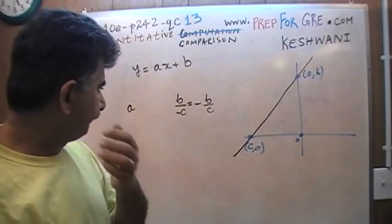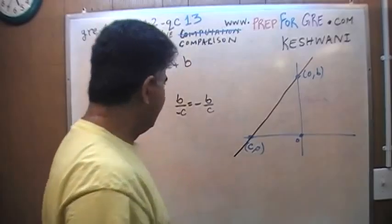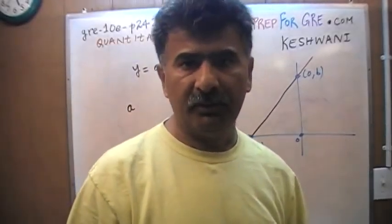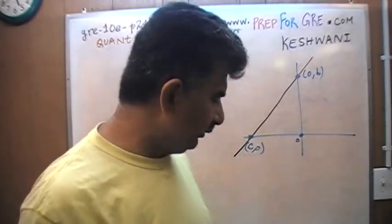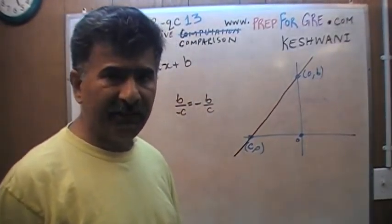The question simply is which quantity is bigger? A or B over negative C? That's all they want to know. And of course, B over negative C is simply negative B over C.